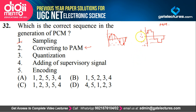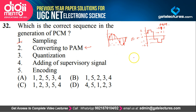Then next you do encoding. Encoding means suppose 2 is going to be coded as 1,0 and 1 coded as 0,1 and 0 coded as 0,0 — converting them to some binary values. After encoding, in the end we add a supervisory signal or some synchronous bits to synchronize the signal sent from the source end with the signal being received at the receiver end. So the correct sequence is: sampling, then converting to PAM, then quantization, then encoding, and in the end adding a supervisory signal — which is option C.